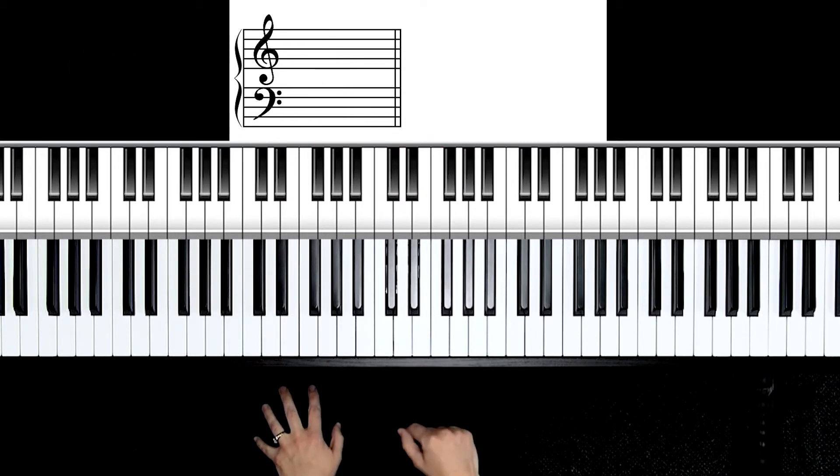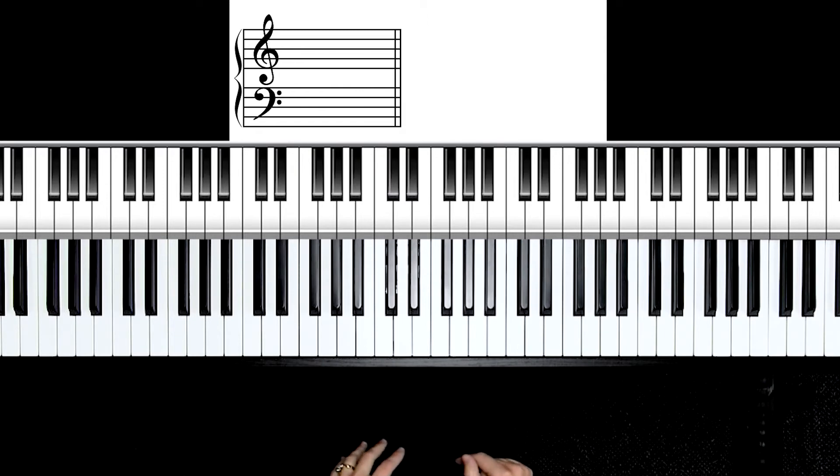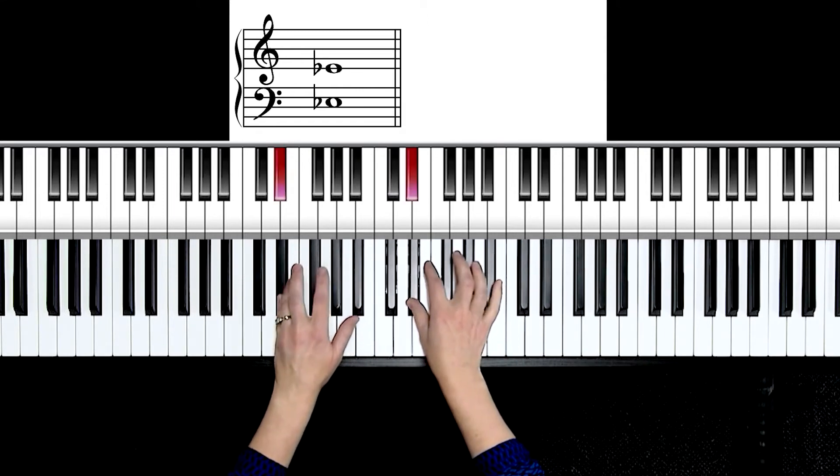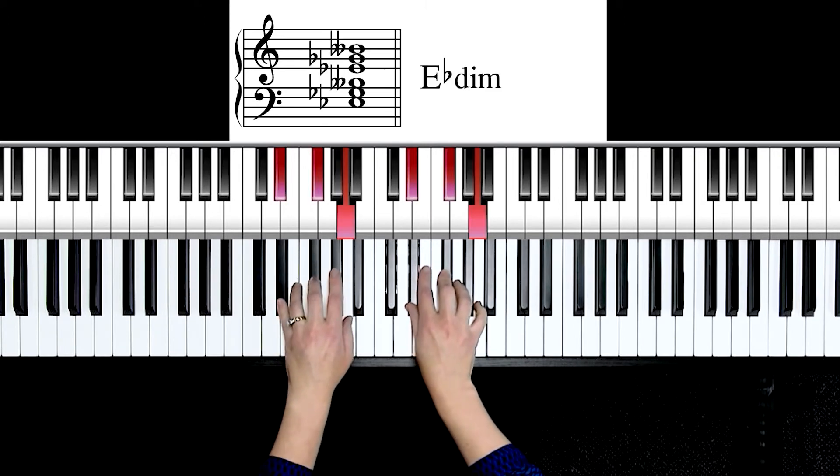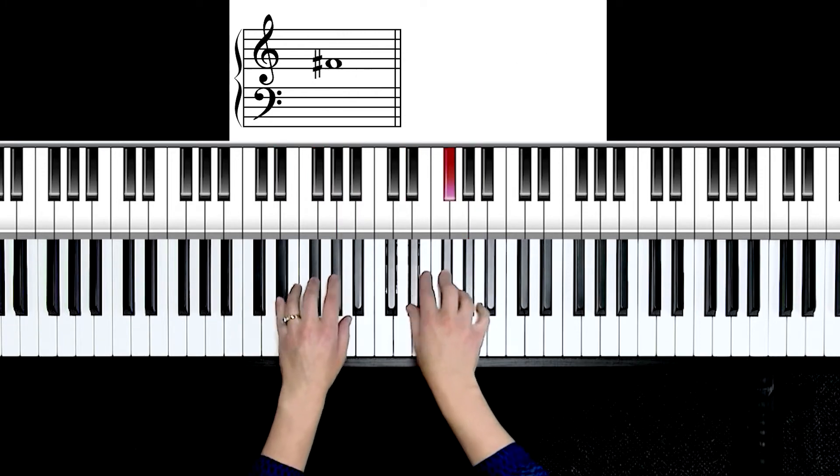Let's transcribe this chord to another key. Let's go to E flat diminished. Use your half step pattern. One, two, three. One, two, three. E flat, G flat, E double flat.